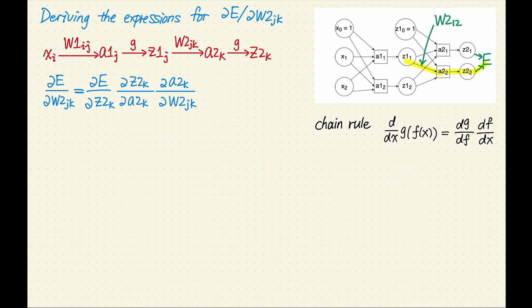Let's make some of the terms more concrete. What is the middle term? z2 is g of a2, so the middle term is the derivative of the activation function g, or in other words, g prime of a2.